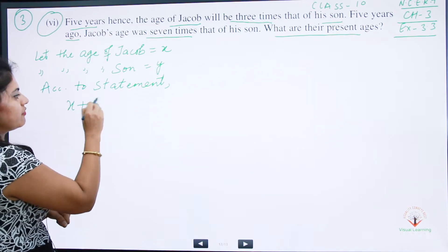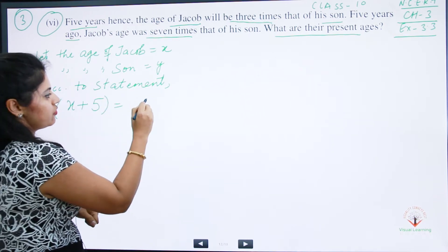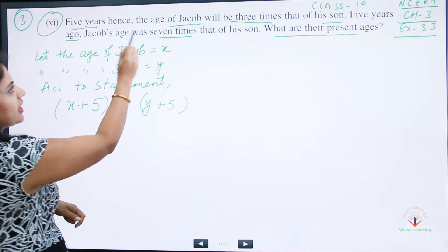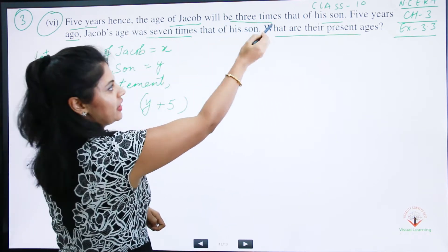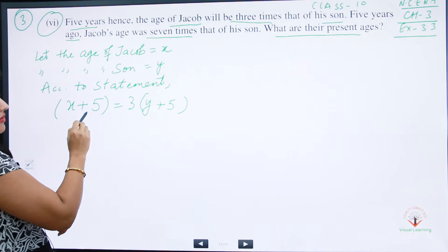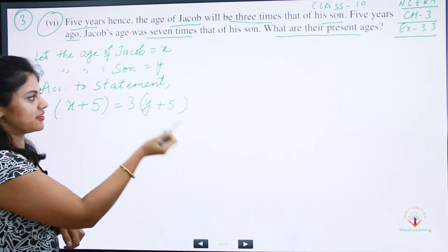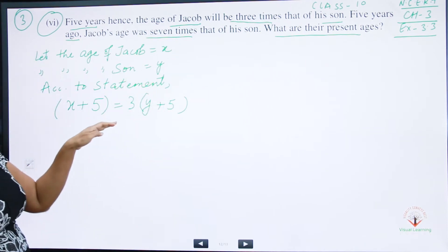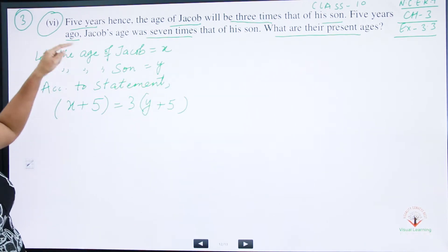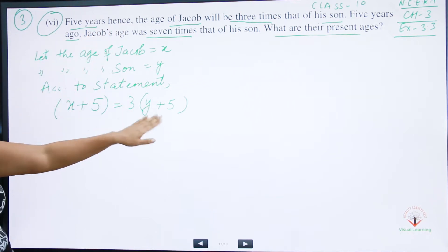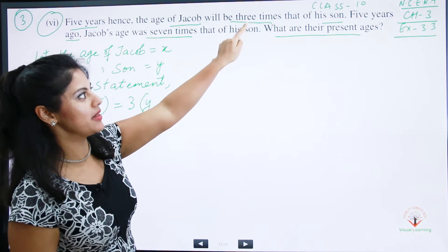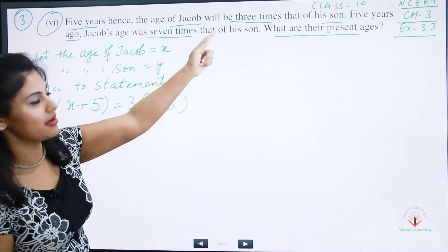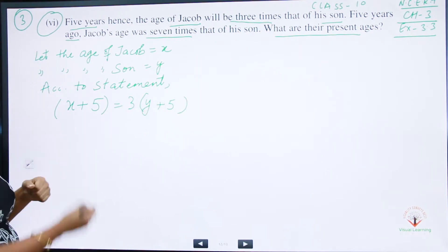Five years hence means we add five to both ages. So x plus five for Jacob, and y plus five for the son. The age of Jacob will be three times the son's age, so: x + 5 = 3(y + 5).